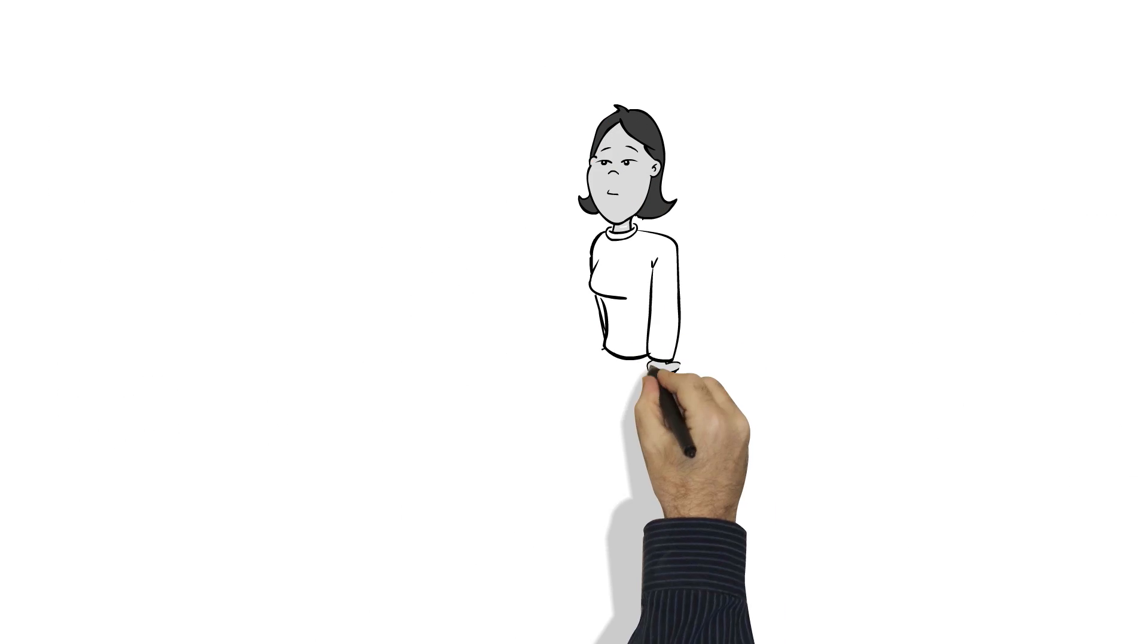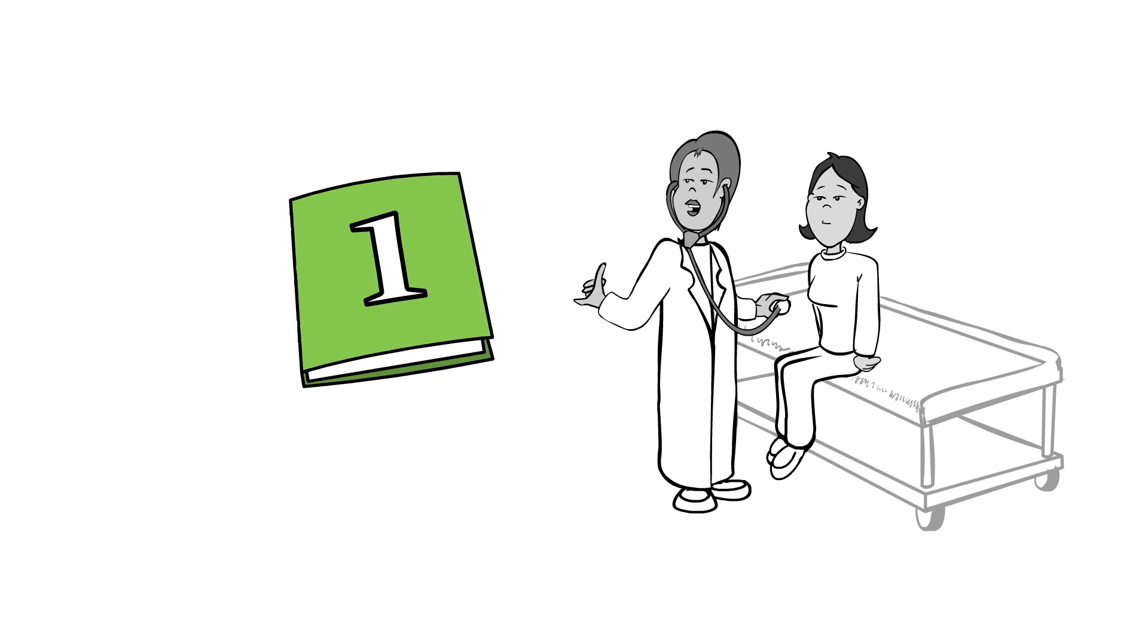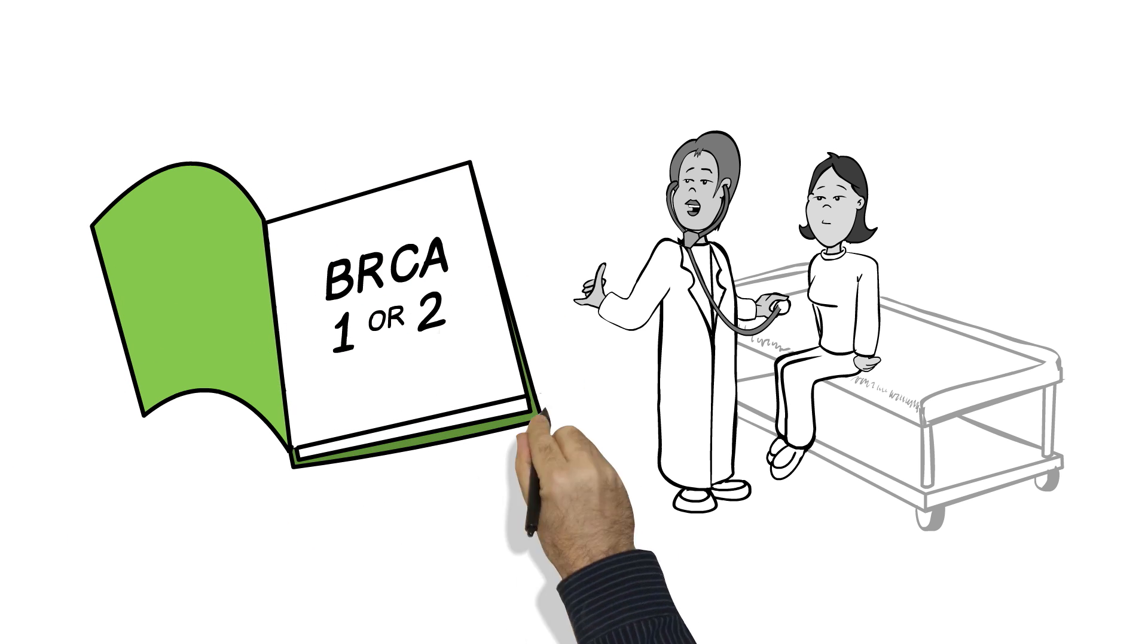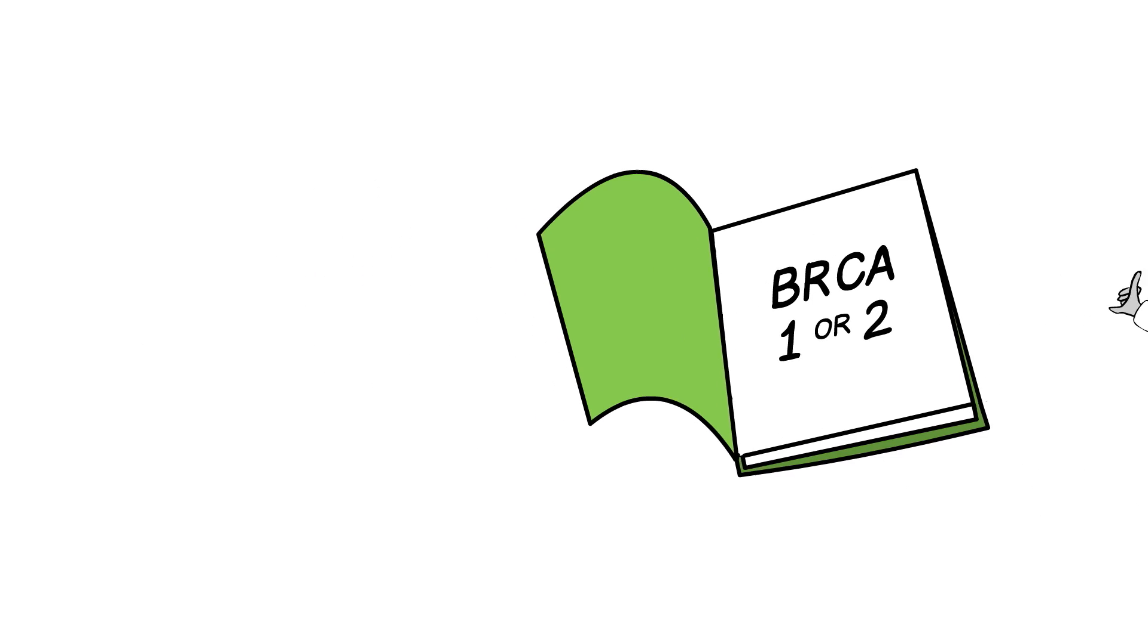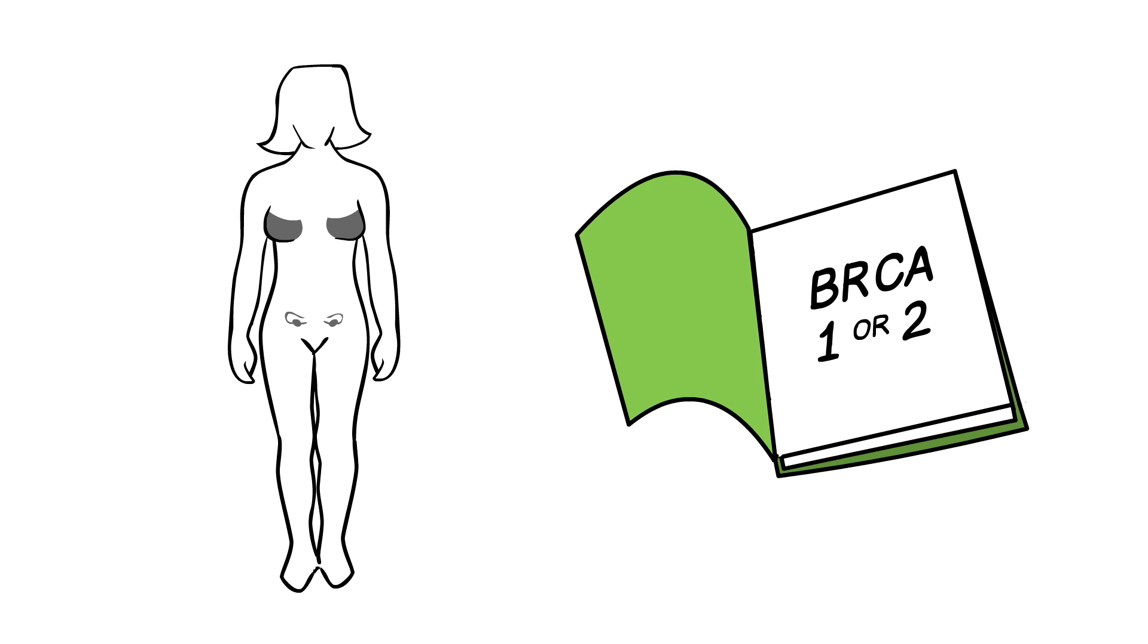Category one can also tell you about your response to certain medications. For example, in the course of a medical workup to find a genetic cause of a woman's condition, a doctor orders genomic sequencing and happens to also discover she has the BRCA1 or 2 mutation, kind of like a spelling mistake in that gene, which puts her at high risk of developing breast or ovarian cancer.